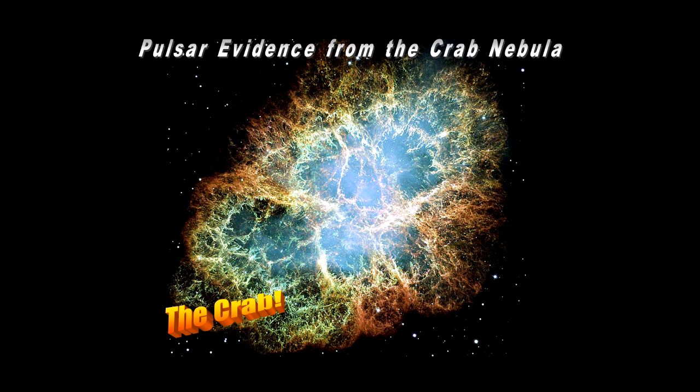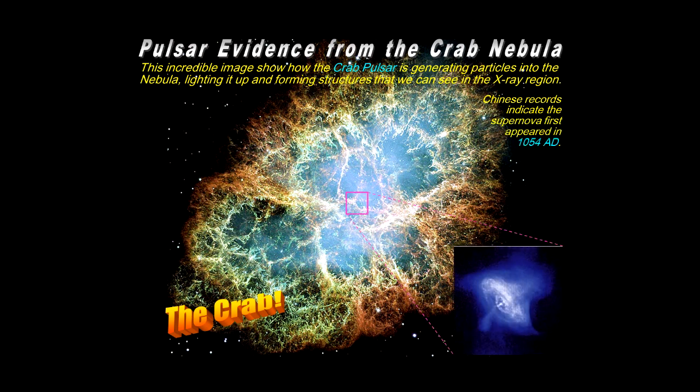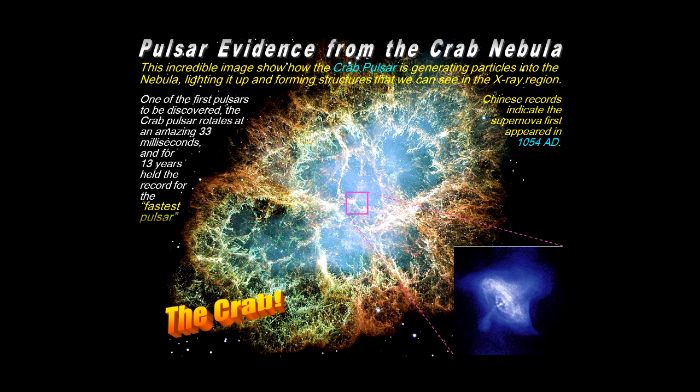The Crab Nebula is an early and very well-studied pulsar. It shows particles being generated into the nebula in the X-ray region. Chinese records indicate that this was a supernova that appeared in 1054 AD. One of the earliest pulsars and it rotates at 33, in 33 milliseconds. So for a long time, it held the record for the fastest pulsar. And again, a white dwarf would fly apart at these kind of rotation speeds. So neutron star was the answer.